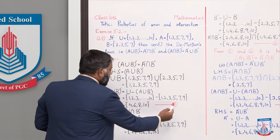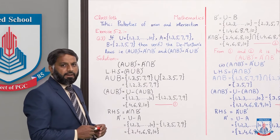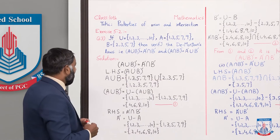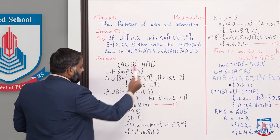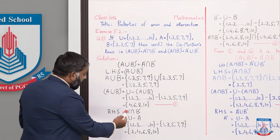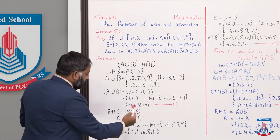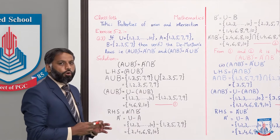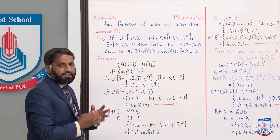This is our left hand side solved, and we call it equation 1. Now we start the right hand side: A'∩B'. First we find A' complement, then B' complement, then we take the intersection of both complements.